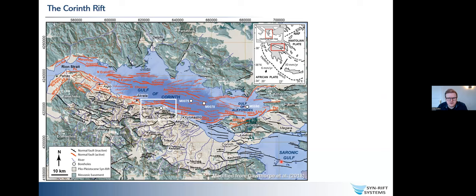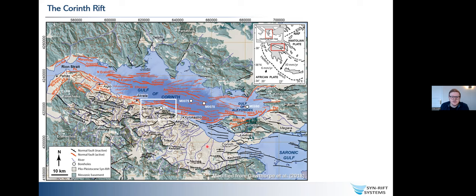For those unfamiliar with the Gulf of Corinth, this is a map from Rob Gawthorpe's 2018 paper summarizing the regional setting. It exists as an extensional basin in the back-arc of the Hellenic subduction zone, forming roughly a 10 to 20 kilometer wide gulf connected to the Mediterranean on the western end. The green color is basement - mostly Mesozoic carbonates and flysch deposits from the Hellenide orogeny - and the pale buff-brown colors are syn-rift deposits, localized within these black and red faults. The black faults are older normal faults, and the red faults control the active gulf at the moment.